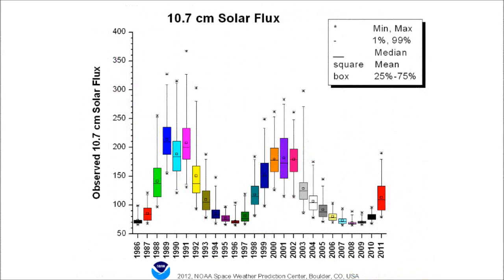Similar to the sunspot number, the solar flux value is actually a measurement of radio signal from the sun. This index is taken once a day at a frequency of 2800 MHz. Increased radio noise from the sun means more ionizing radiation and correlates with the sunspot number. Solar flux values range from 60 to 300.